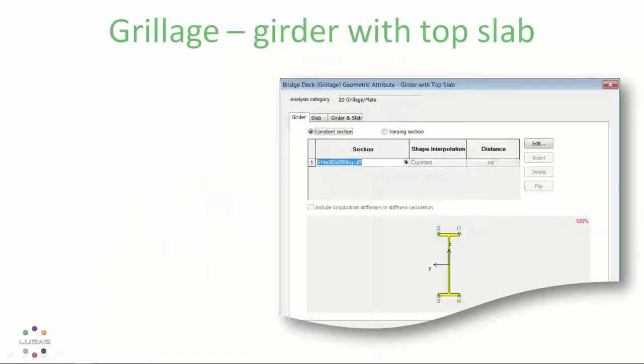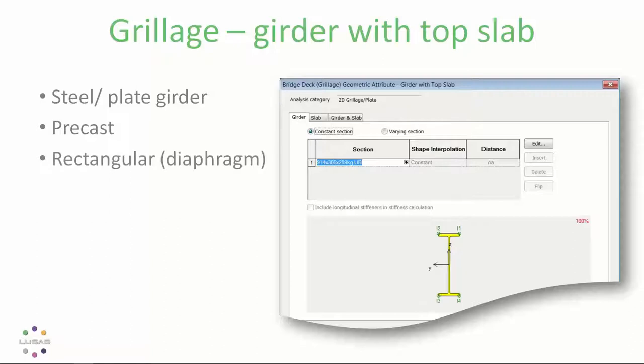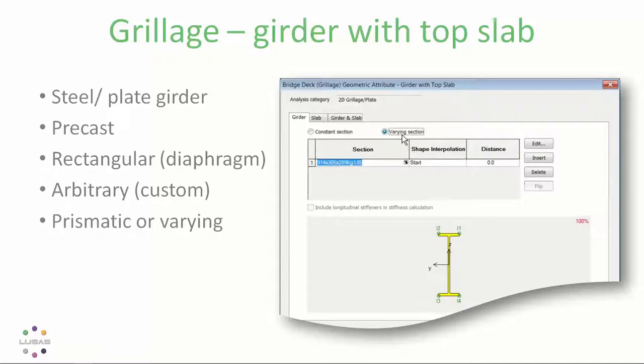It includes a grillage load, grillage cross section definition, which allows you to define any girder section, be it a rolled steel or plate girder, or indeed a precast or maybe a rectangular section like a diaphragm, for example, or in fact any custom shape you care to define. The sections might be prismatic or varying. And if it's varying, it can be assigned stretch to fit over a series of lines in a grillage. So that's really convenient.